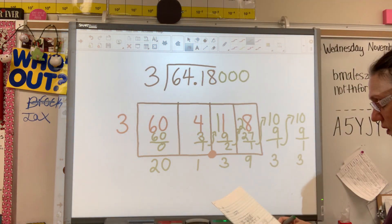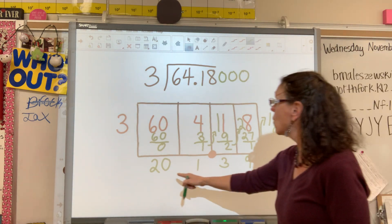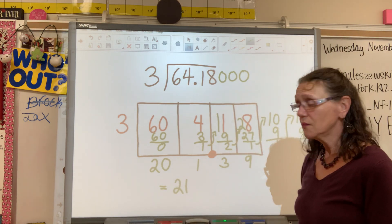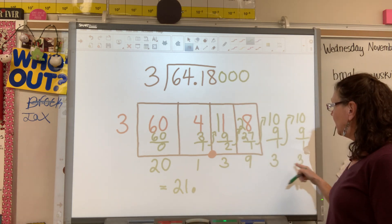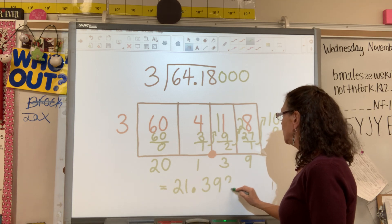So here's what we do now to determine our total quotient. We add our whole numbers together, which gives me 21. I place my decimal point right here. And I don't add these together. I write them in their place value.